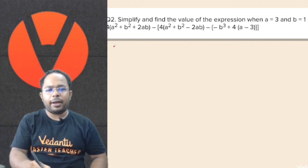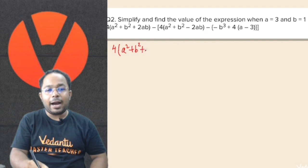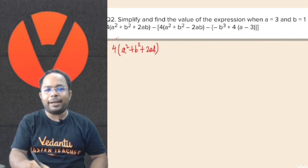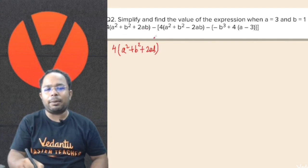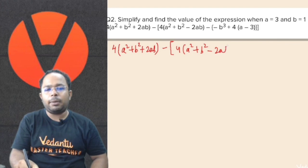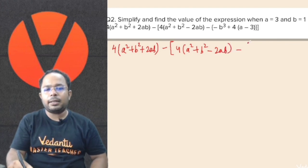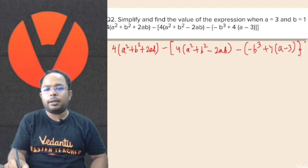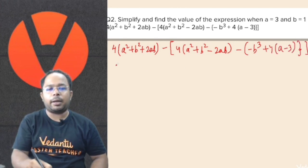What is 4a squared plus b squared? We can use an identity. We apply the identity: a squared plus b squared plus 2ab minus 4a squared plus b squared minus 2ab, in bracket, minus minus of b cubed plus 4a minus 3, in curly and square brackets.